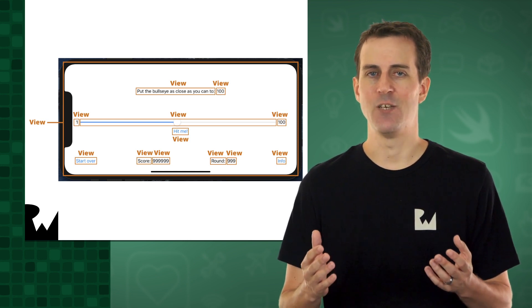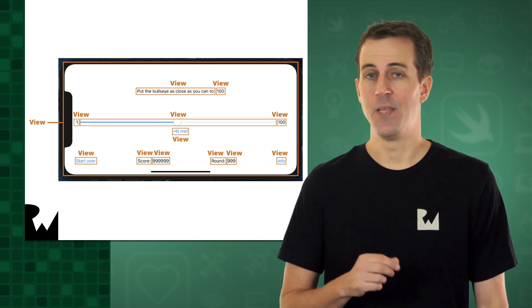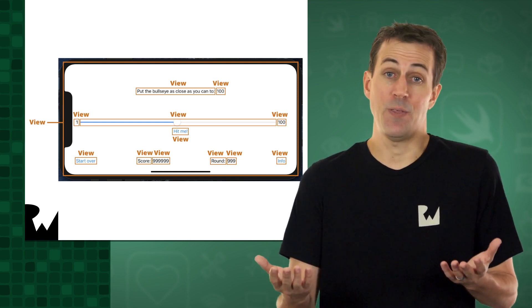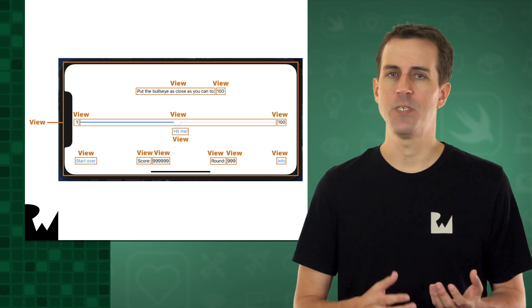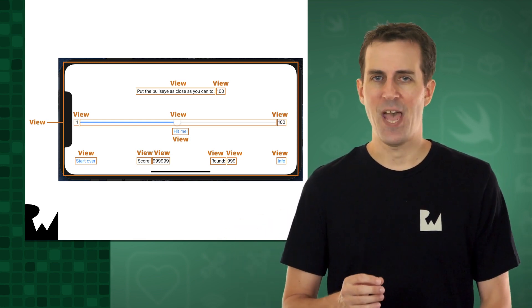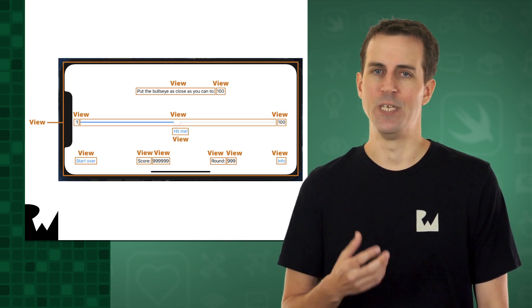A view is anything that can get drawn on the screen. In this screenshot, it seems that just about everything is a view. The text items, the buttons, and the slider, they're all views. In fact, every user interface control is a view.